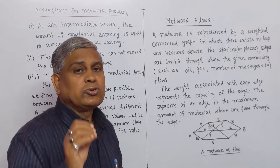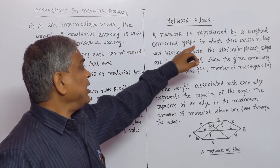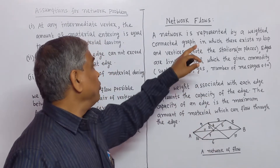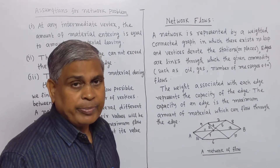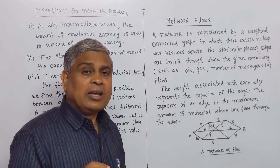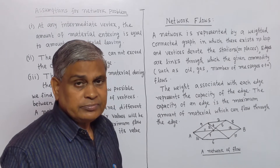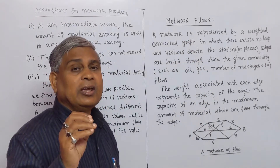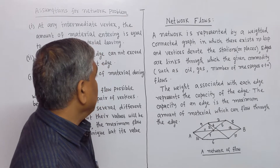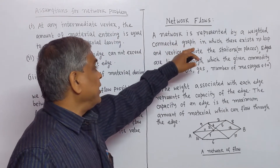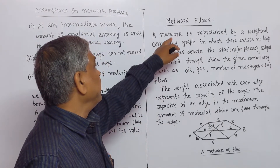A network is represented by a weighted connected graph in which there exists no loop. Weighted graph means each edge is assigned a non-negative number. Connected means there is a path between any two vertices. This weighted connected graph should not have any loop for a network.